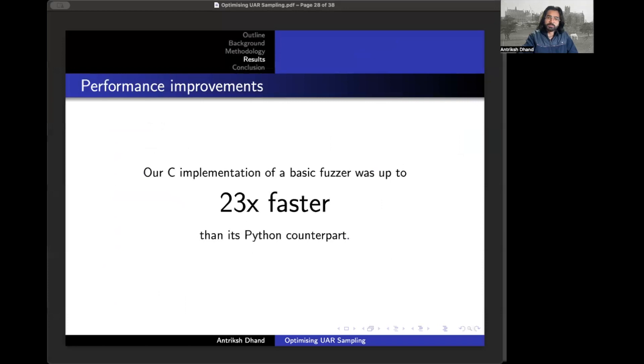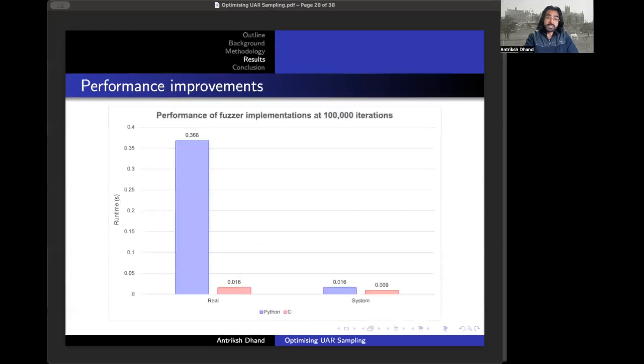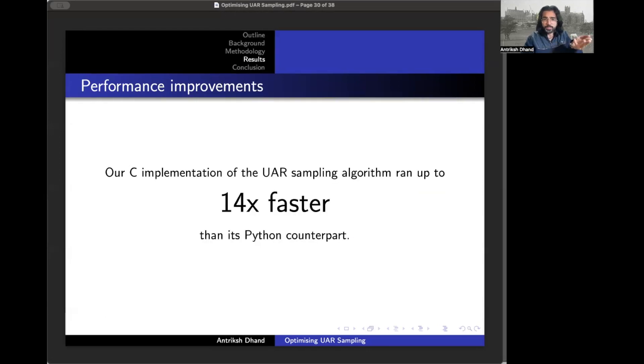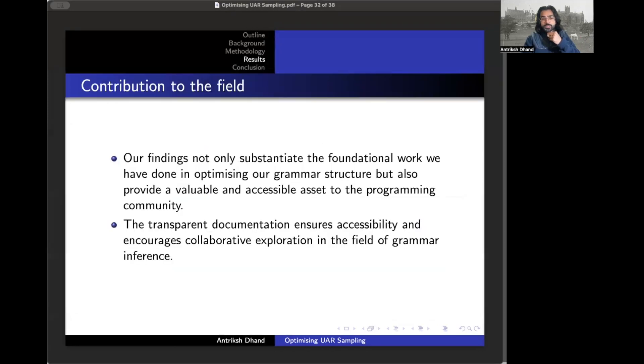So how do we do? Well, using all of the above optimizations, we achieved really significant improvement in performance. Our Basic Fuzzer now operates at 23 times the speed of its Python counterpart. Such a monumental improvement really goes to show not only the effectiveness of our approach of optimizations, but the decision to transition to a language like C really paid off. Similarly, our UAR sampling algorithm is now running 14 times faster compared to its Python counterpart. So clearly the foundational structures we built in C were far more optimal than relying on Python's dictionaries, lists, and strings.